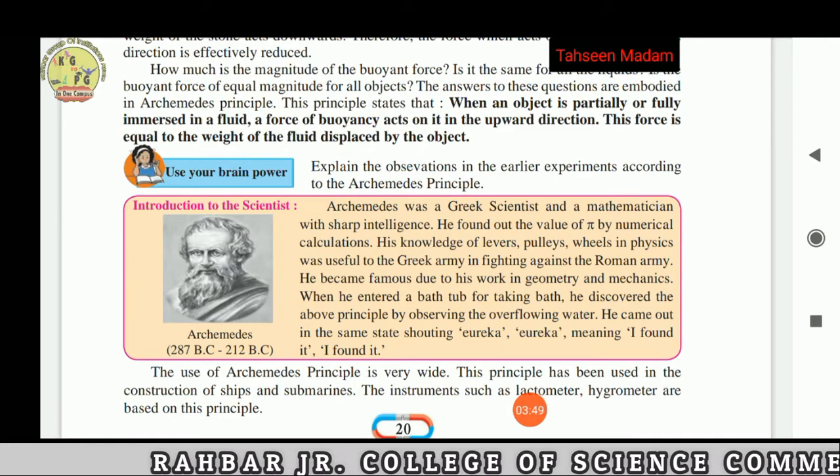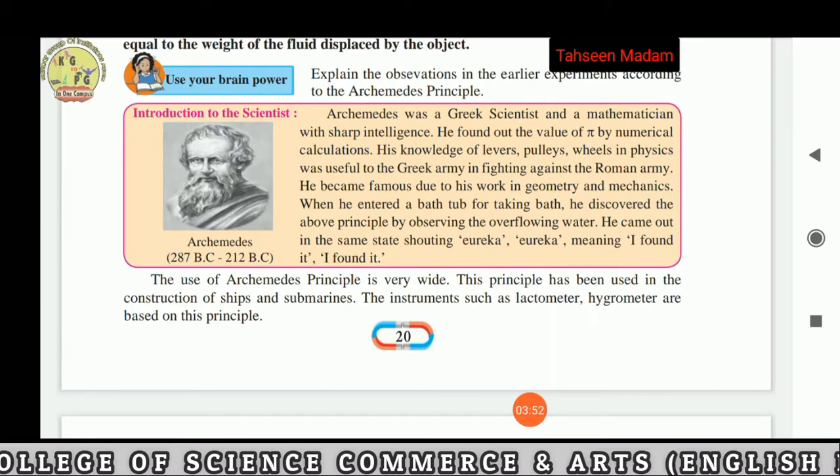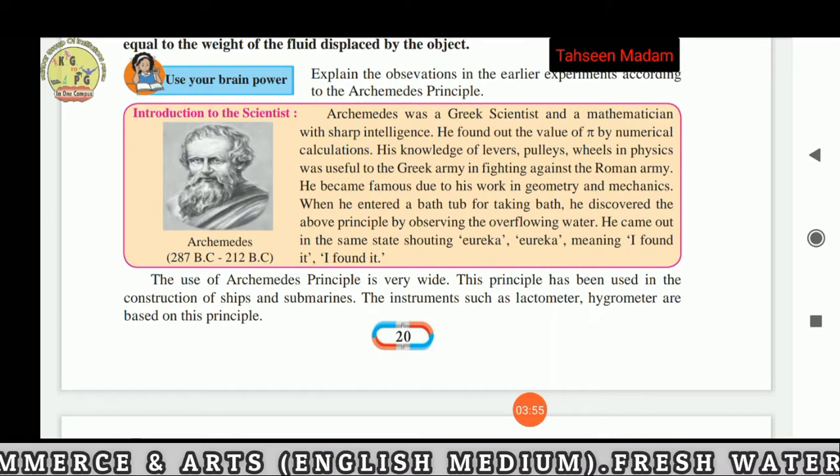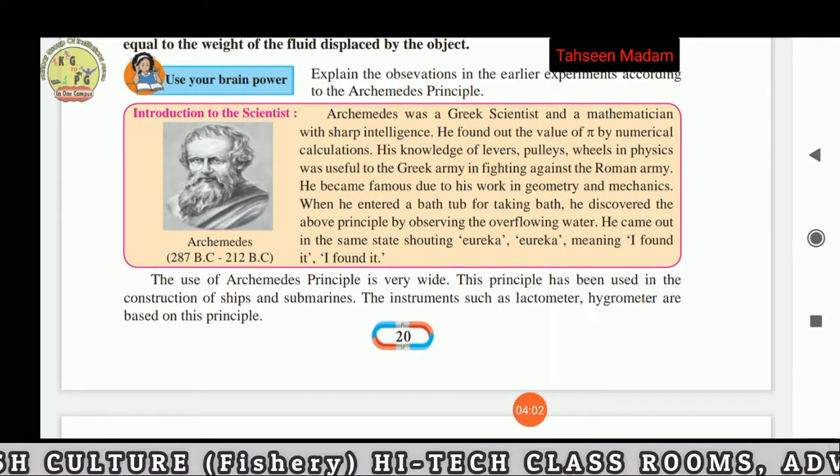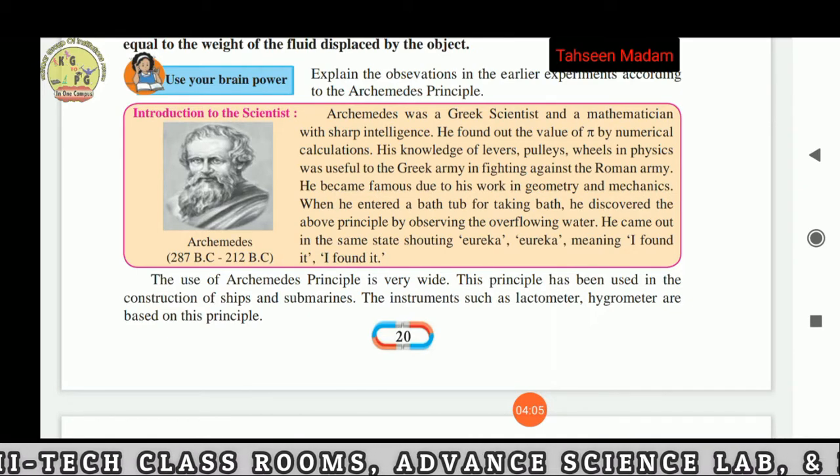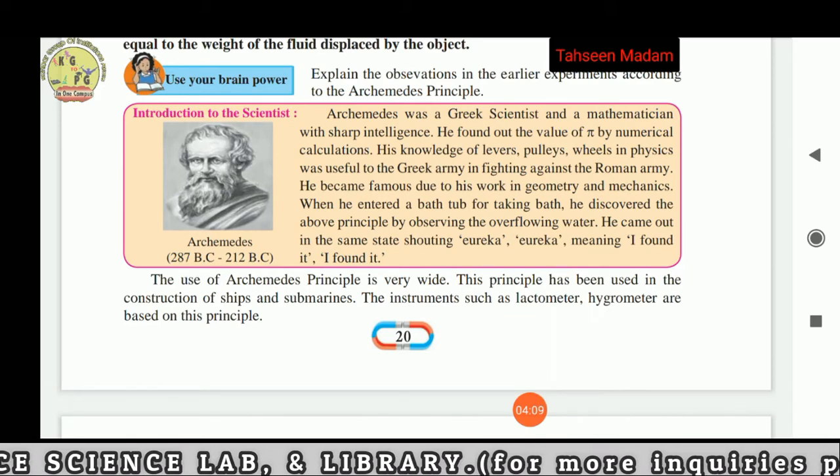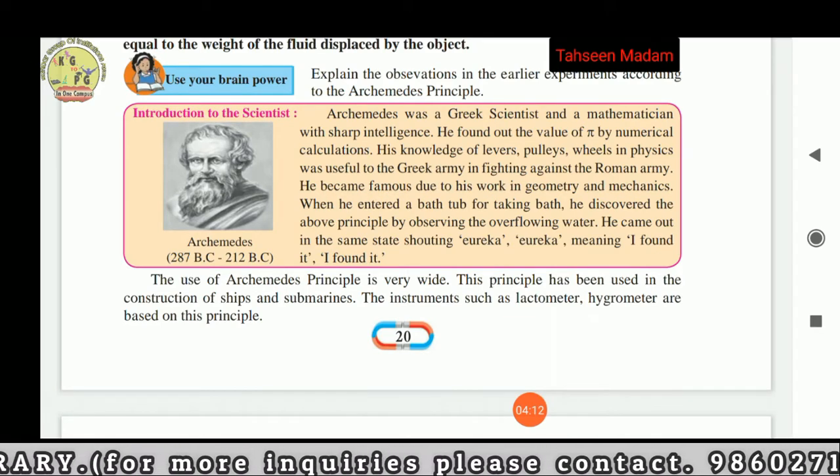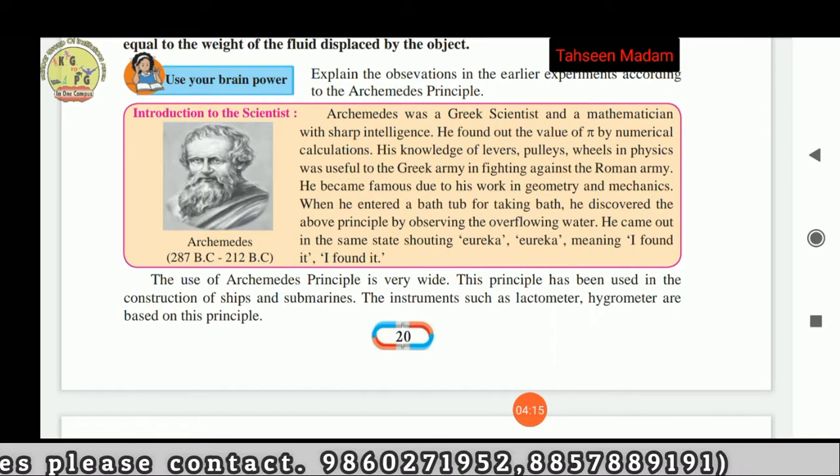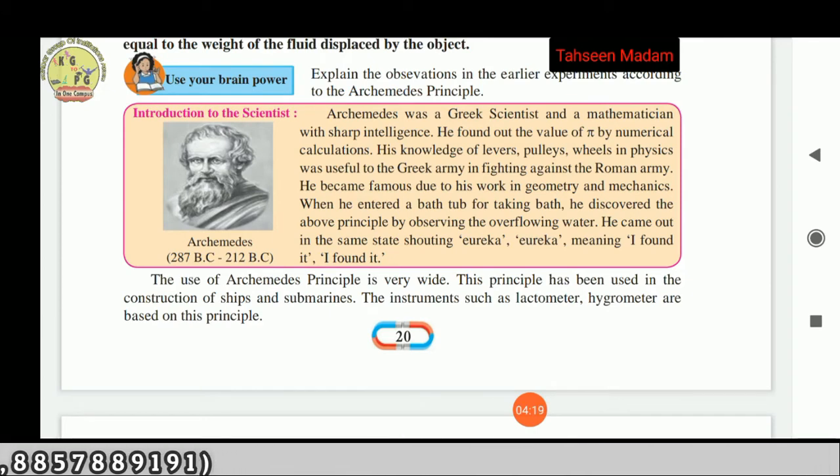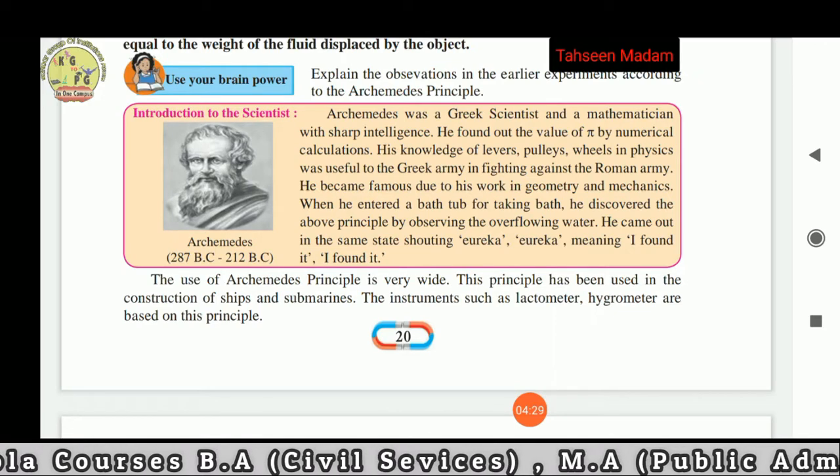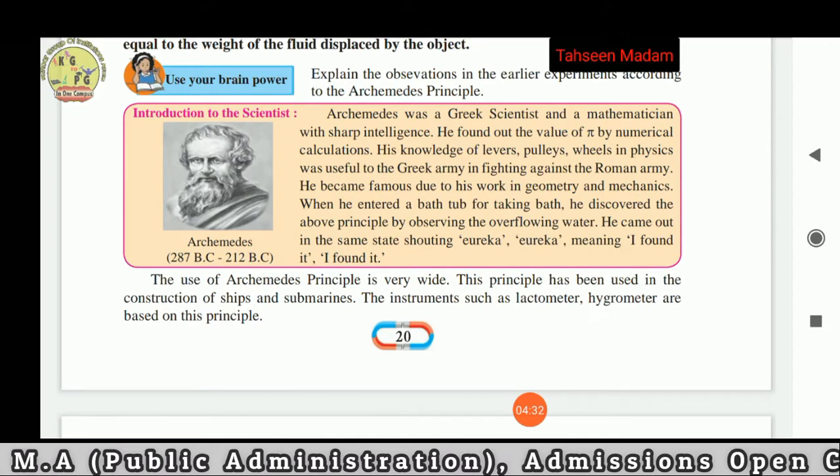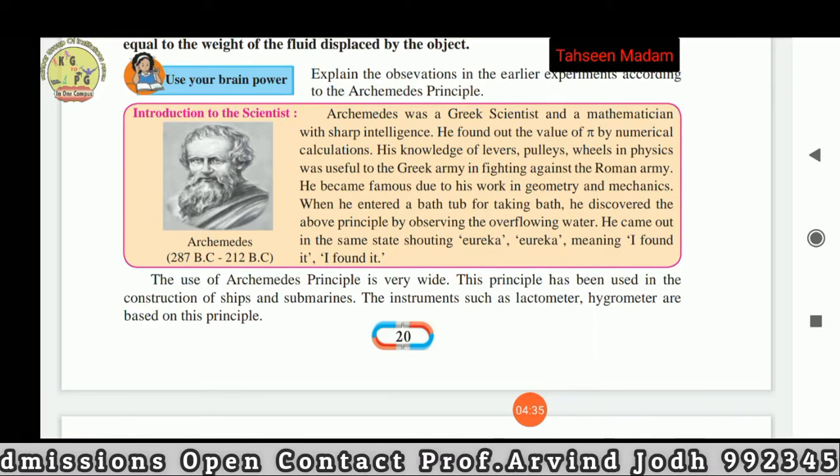Introduction to the scientist. Archimedes was a Greek scientist and mathematician with sharp intelligence. He found out the value of pi by numerical calculations. His knowledge of levers, pulleys, and wheels in physics was useful to the Greek army in fighting against the Roman army. He became famous due to his work in geometry and mechanics. When he entered a bathtub for taking bath, he discovered the above principle. By observing the overflowing water, he came out in the same state shouting Eureka, Eureka, meaning I found it, I found it.